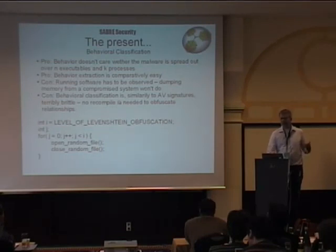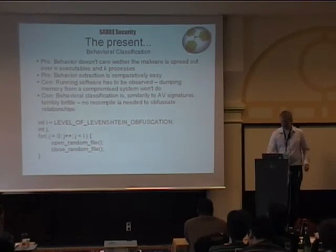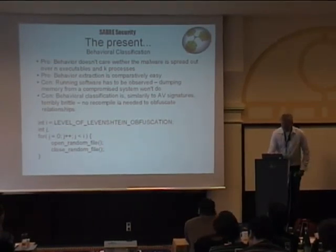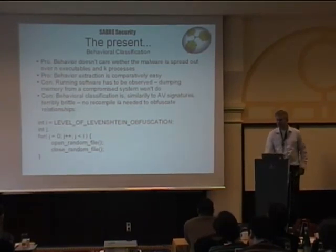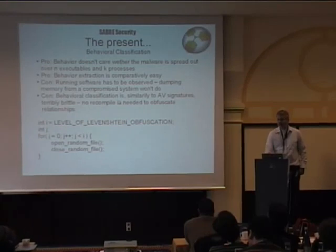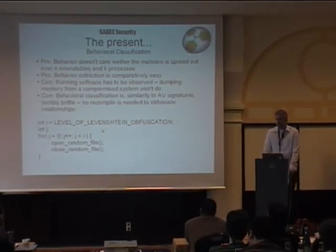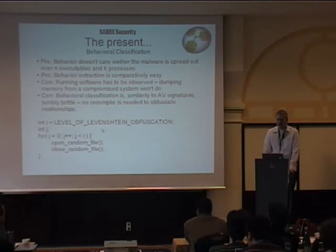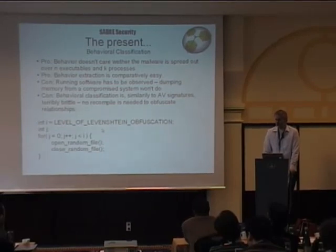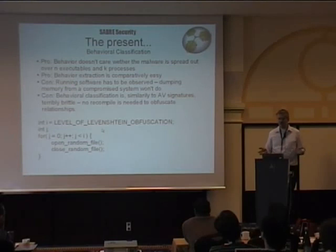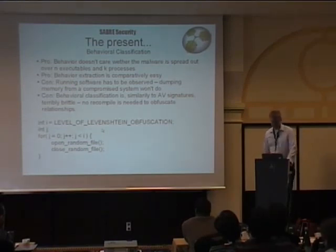A lot of malware just doesn't do anything for a significant portion of time before it actually starts. The biggest problem is that behavioral classification can be trivially fooled — I don't even need to recompile my executable; I can just randomize behavior a little bit and the executable is not even self-similar anymore. These five lines of C code will essentially make an executable not self-similar: you start the executable and open and close random files for a while, with a random number of iterations — so your two sequences are arbitrarily far away from each other with this distance, and you're running the same executable twice.